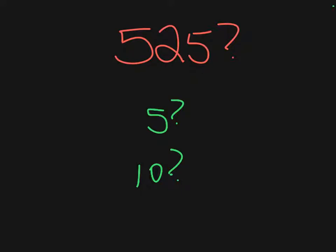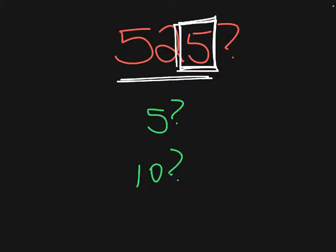Let's take a look at the number 525. We're looking at the number in the ones place, and that is a 5. Thinking about our divisibility rule for 5, the number has to end in either a 5 or a 0. It does end in a 5, so it is divisible by 5. Now for the rule for 10, a number is divisible by 10 if it ends in a 0. This is definitely not a 0 — it's a 5 — so it would not be divisible by 10.